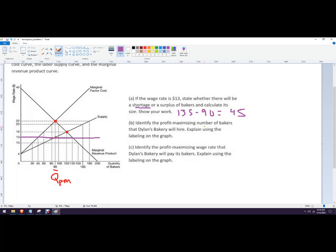Identify the profit maximizing number of workers that they'll hire. So that's going to be 90. And you would say, explain using labeling on the graph. That's because that's where marginal factor cost equals marginal revenue product. And you can say of labor. Identify the profit maximizing wage rate. And so they're going to hire at $13 an hour because that's where the profit maximizing quantity equals the supply of labor.